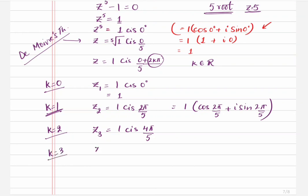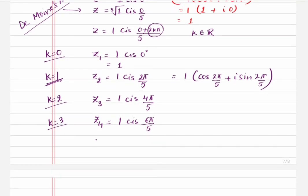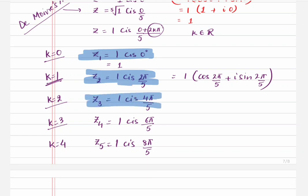When k = 3, z₄ = 1 cis (6π/5), and when k = 4, z₅ = 1 cis (8π/5). Again, you can convert to rectangular form if you want, but leaving it in polar form is absolutely fine. So these are your five roots.